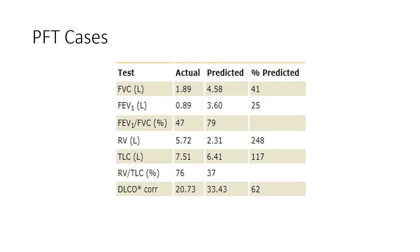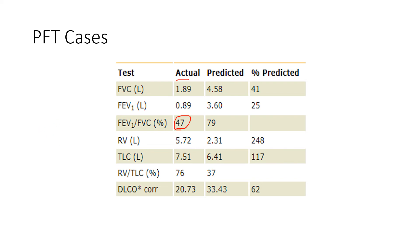So let's move on to our next case. First thing we always look at: what is the actual FEV1/FVC ratio? It's 47%. We said less than 0.7 indicates an obstructive defect, and 0.47 is clearly below that threshold. This would be classified as an obstructive defect.